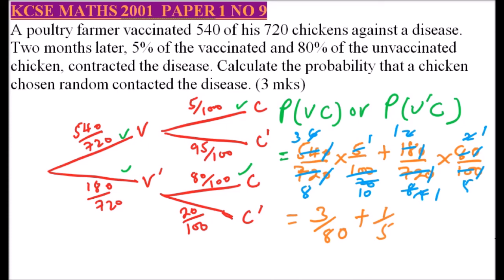We then find the LCM of 80 and 5, which is 80. So 3 over 80 plus 1 over 5 becomes 3 over 80 plus 16 over 80, giving us 19 over 80. So that is the probability that a chicken chosen at random contacted the disease. That's how you work out that question, and you get yourself 3 marks.